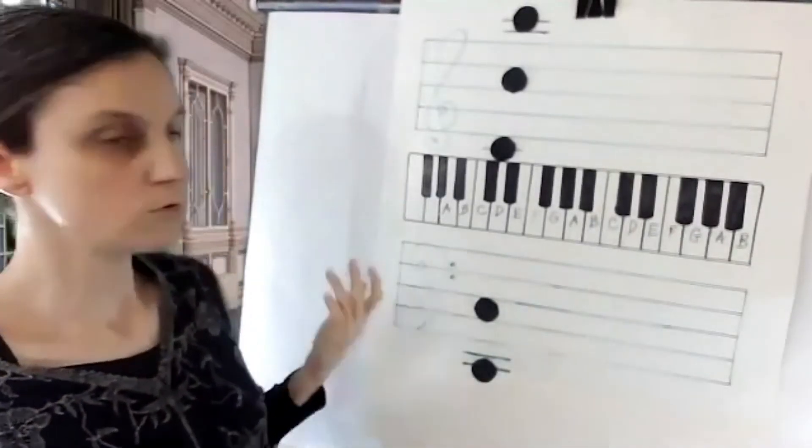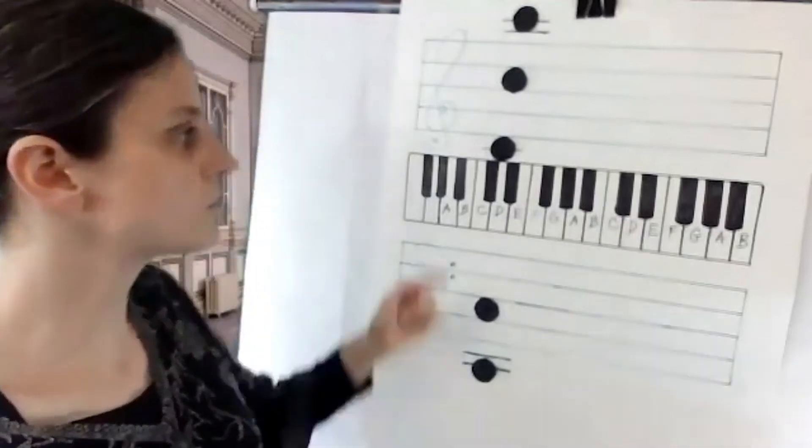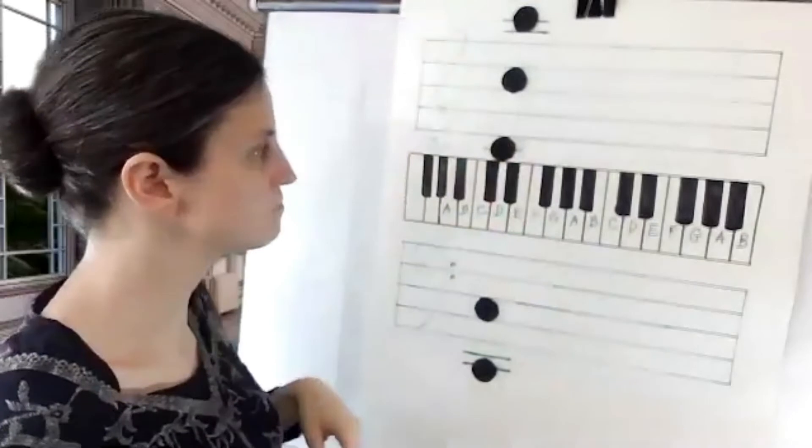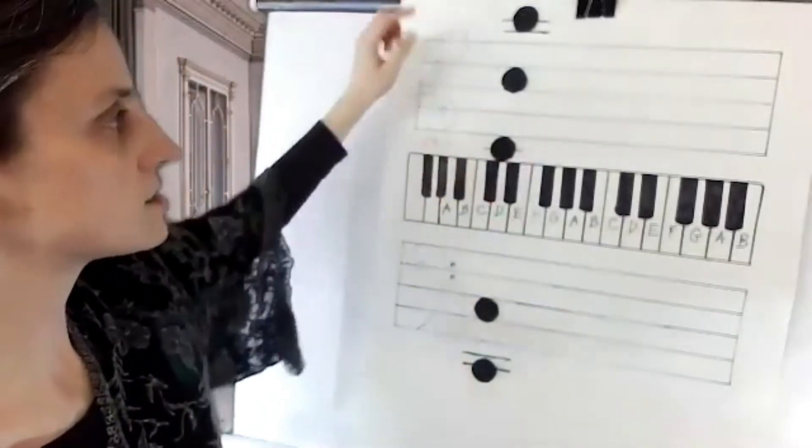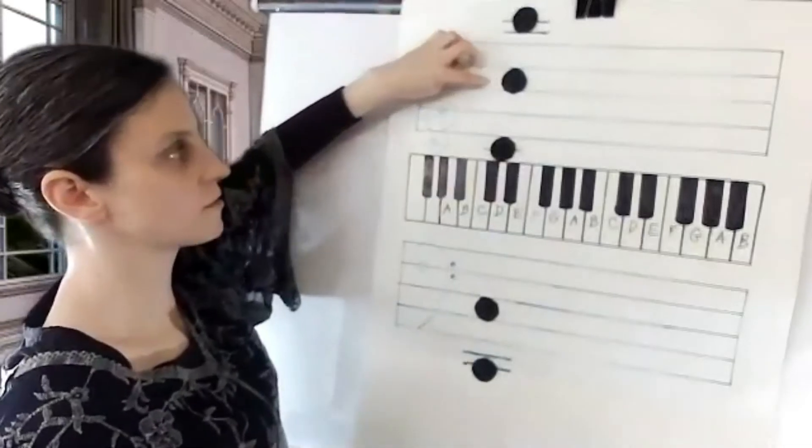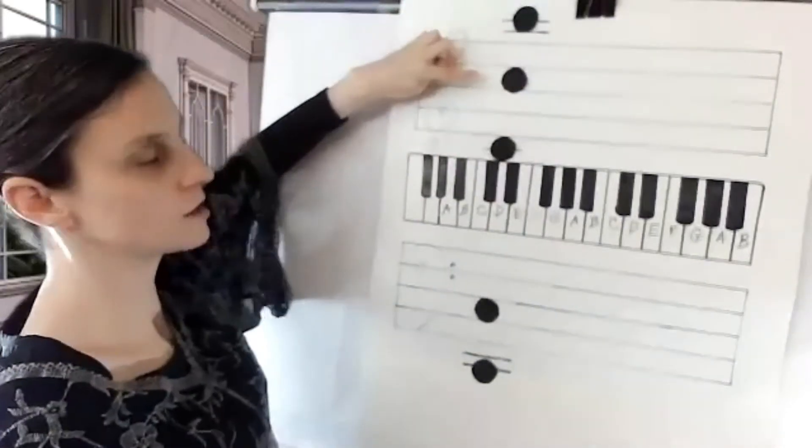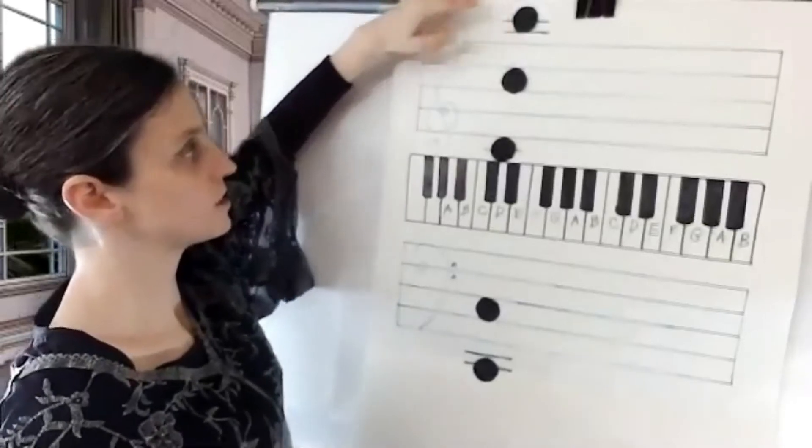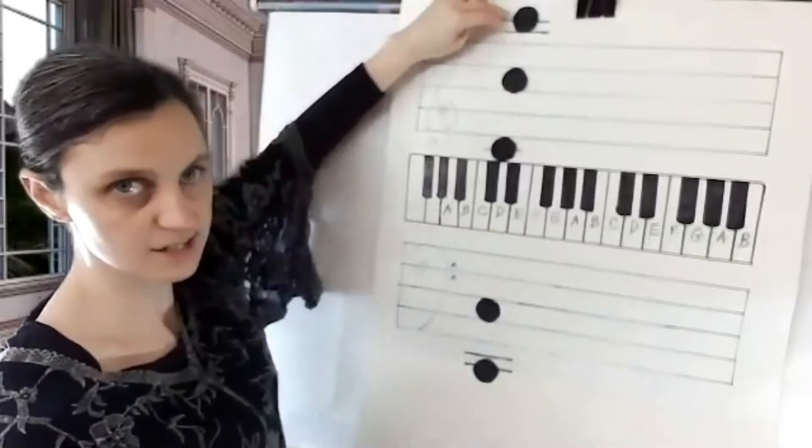Okay, so the C method. You've got middle C right here in between the two staffs. And you've got the second line to the top, the second space to the top, C. And then two ledger lines above the treble staff is high C.